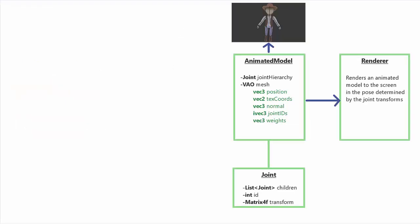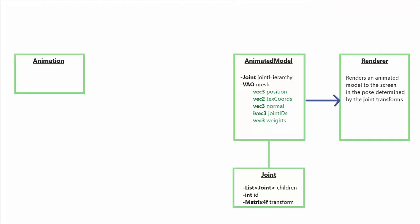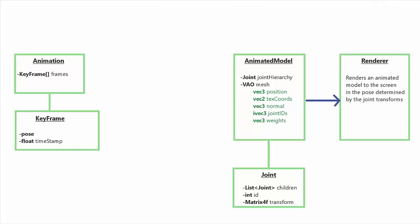So far we've got an animated model that we can put in any pose by changing the transforms of the joints, and we have a renderer that can render that animated model in that pose. Let's now have a look at how an animation is represented in the code, and this is definitely the simplest part of the whole system. As we saw earlier, an animation is simply a series of keyframes, and a keyframe is just a certain pose at a certain time of the animation.